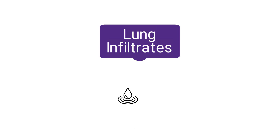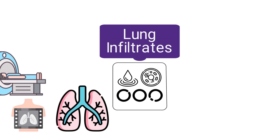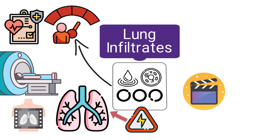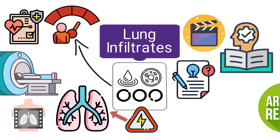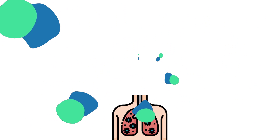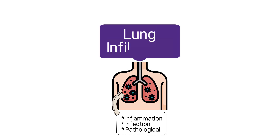Lung infiltrates refer to substances such as fluid, cells, or other materials that accumulate within the lung tissues and are visible on a chest X-ray or CT scan. These infiltrates are not normal parts of the lung structure and can be indicative of various medical conditions. The presence of infiltrates in the lungs can be a sign of inflammation, infection, or other pathological processes affecting the lung tissue.